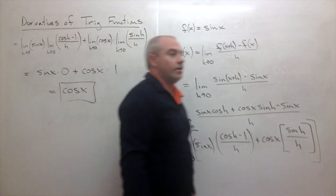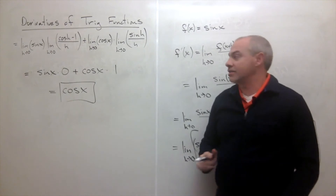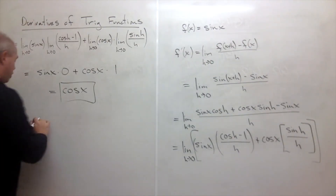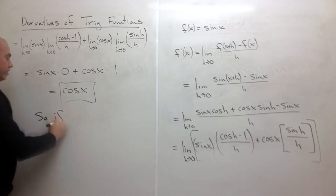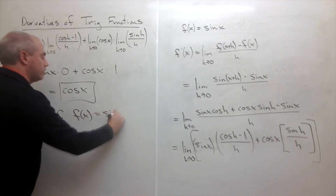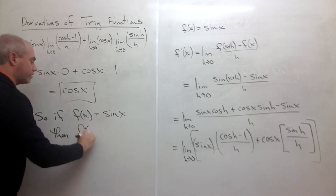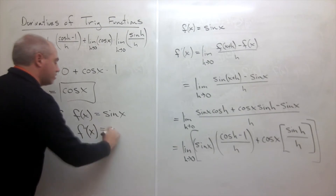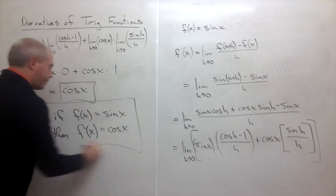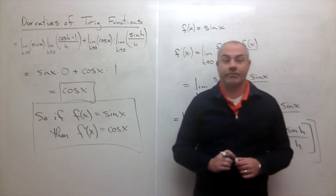So we end up with sine of x times zero plus cosine of x times one, which gives us cosine of x. So if f of x equals sine of x, then f prime of x is cosine of x. And we have the derivative of our first trig function.